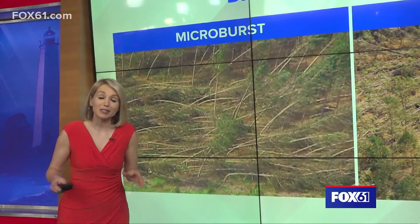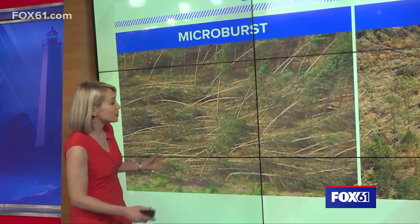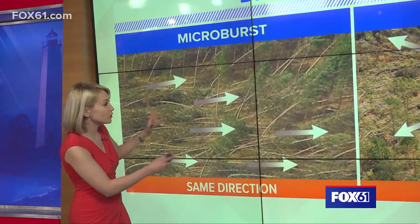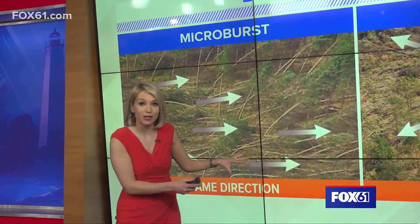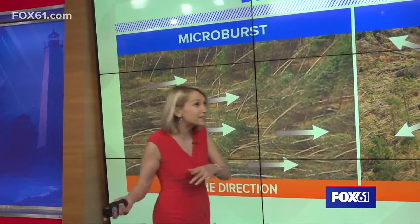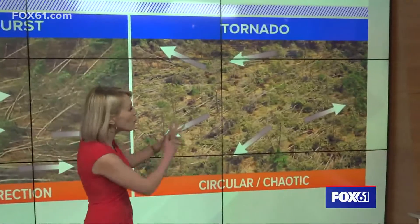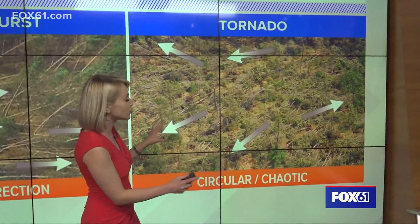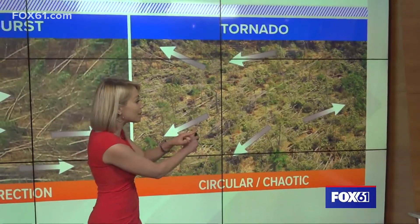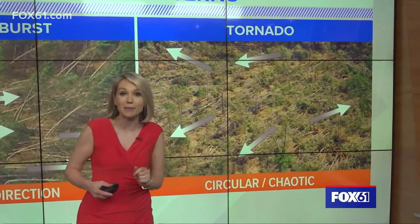If damage is caused by a microburst, you'll often see big uprooted trees knocked over in the same direction. Conversely, if it's tornado damage, it's going to be more chaotic, with big uprooted trees overlapping instead of being knocked down the same way.